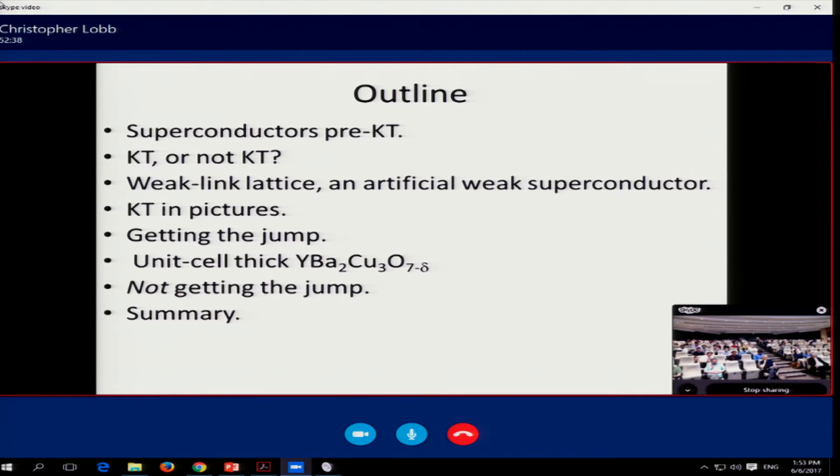What I'd like to do is get to what I believe is the key signature of the transition, observing the universal jump in the superfluid density at the Kosterlitz-Thouless temperature. First, I'll do this with an array of weak links, or of Josephson junctions. We actually did see the transition there, although it wasn't trivial. Next, with the development of high temperature superconductors, I should say with their discovery, a lot of people were very tempted to see this beautiful physics in these layered materials.